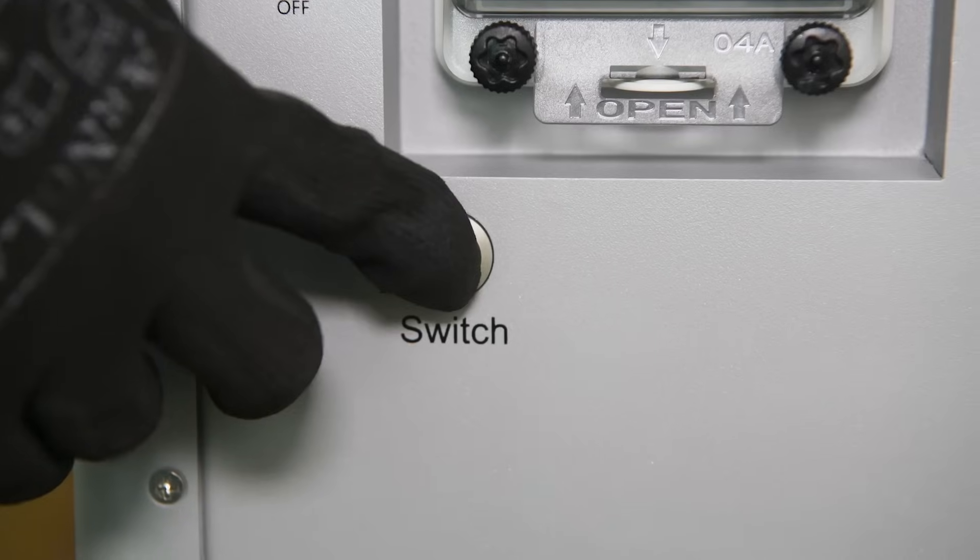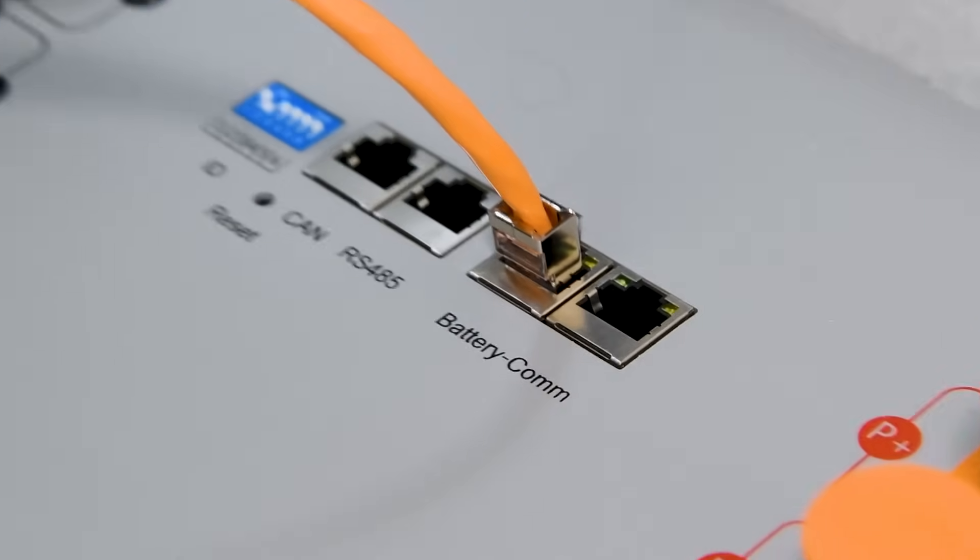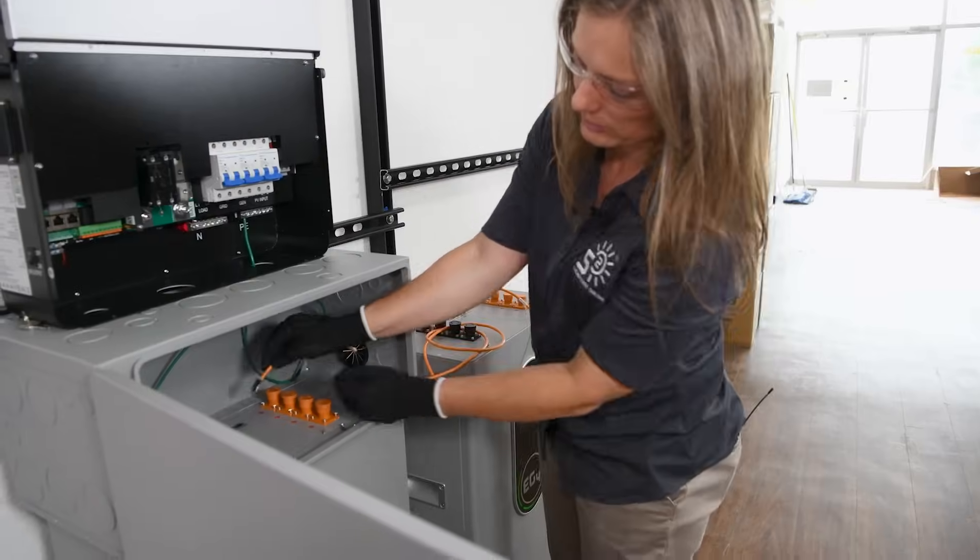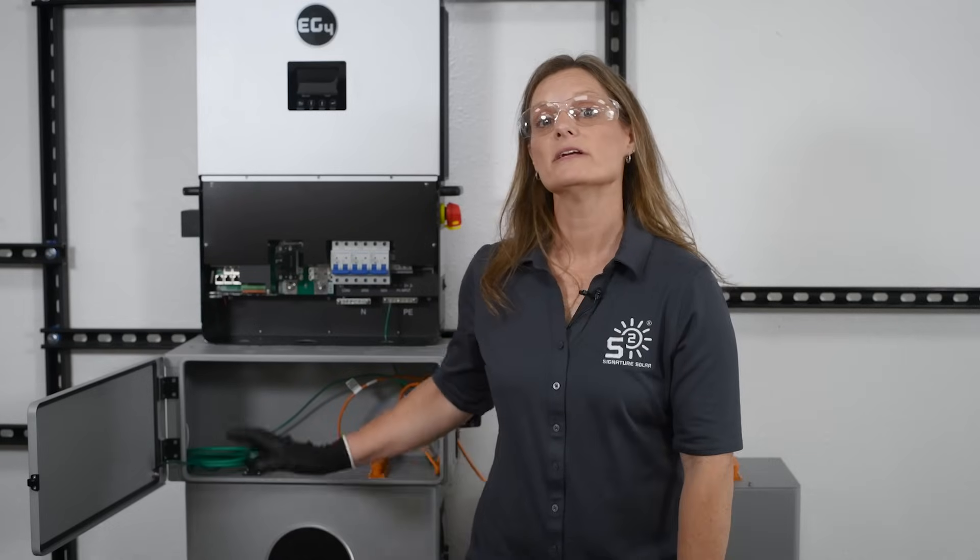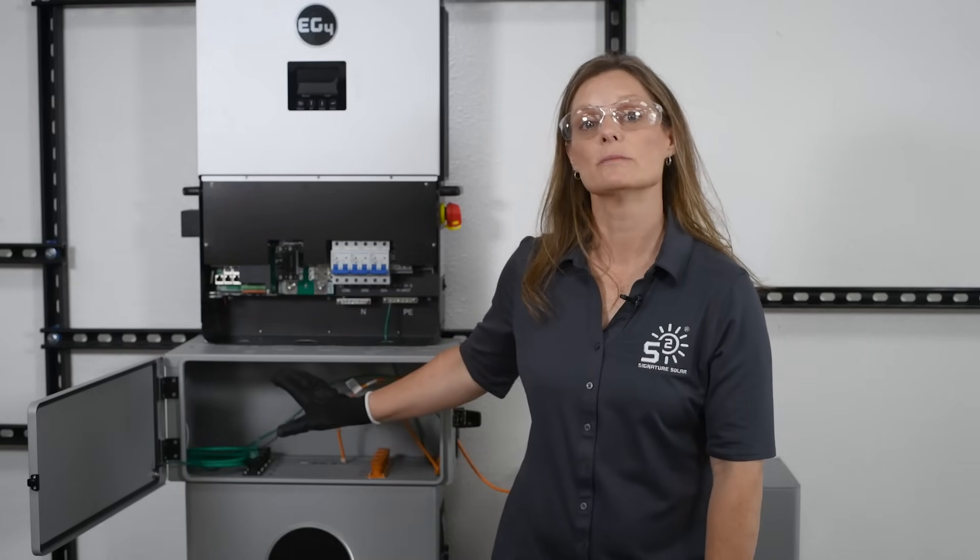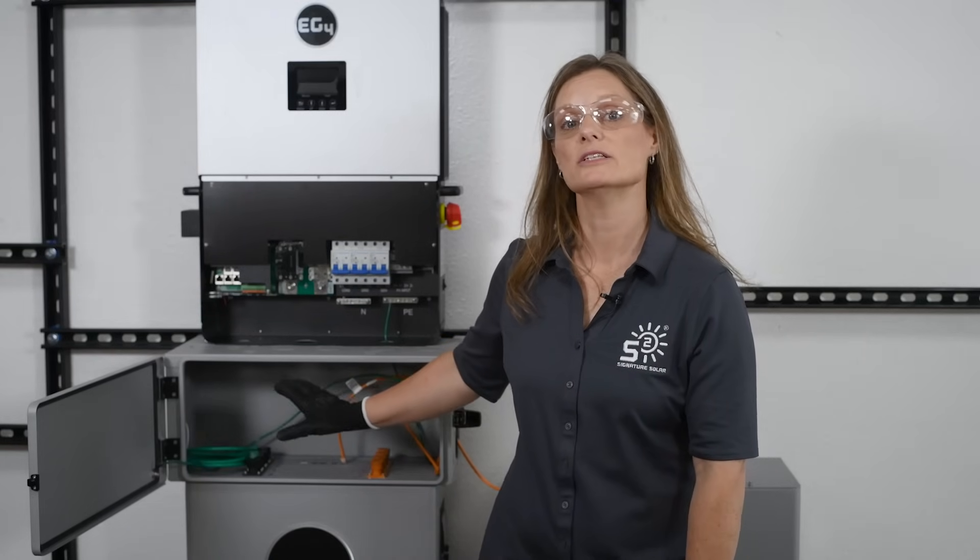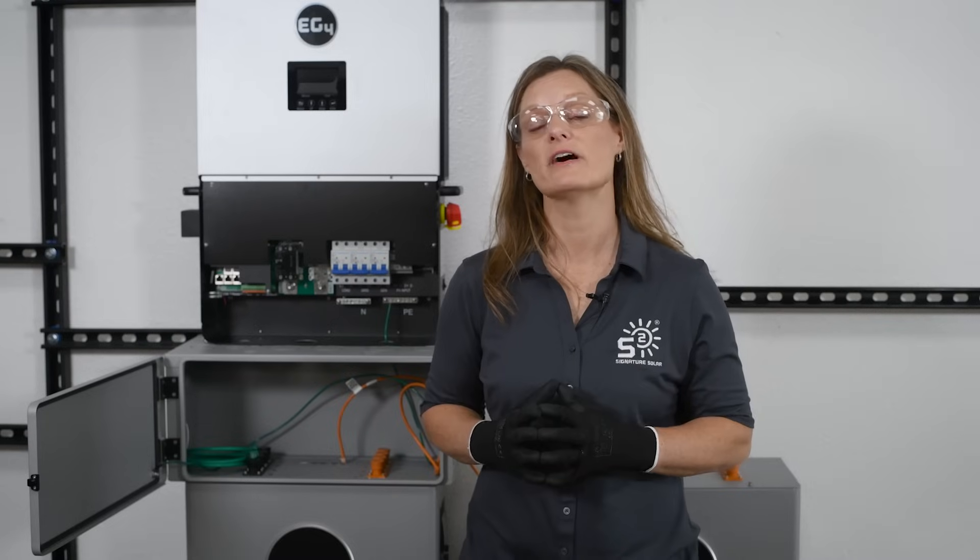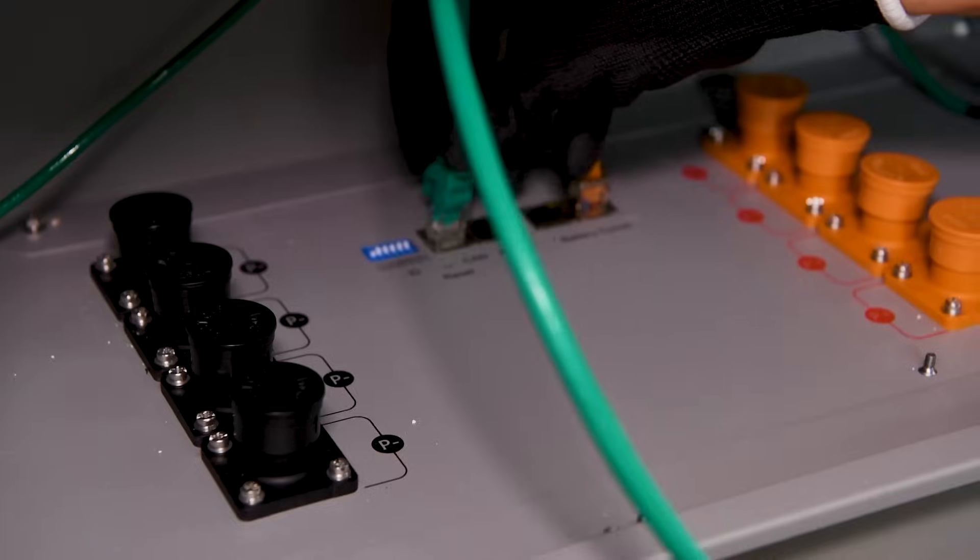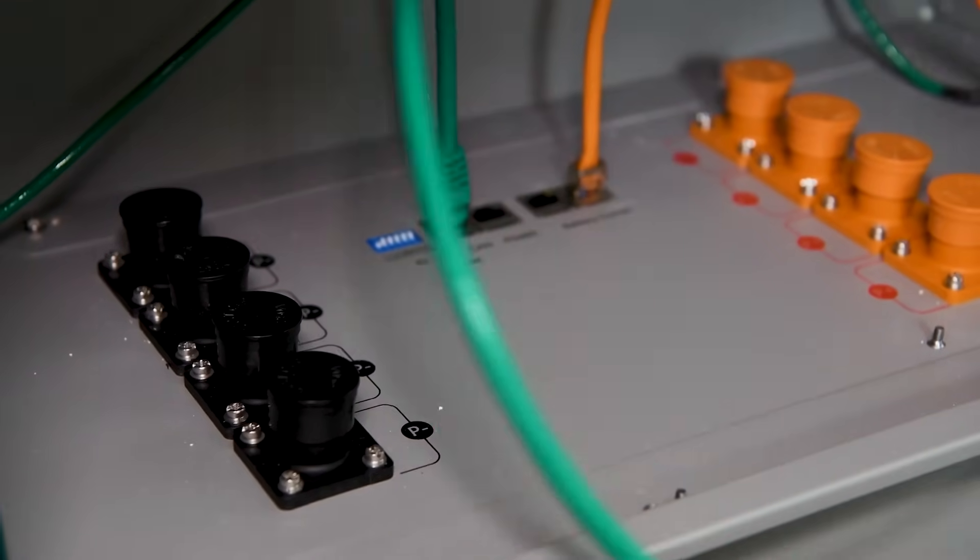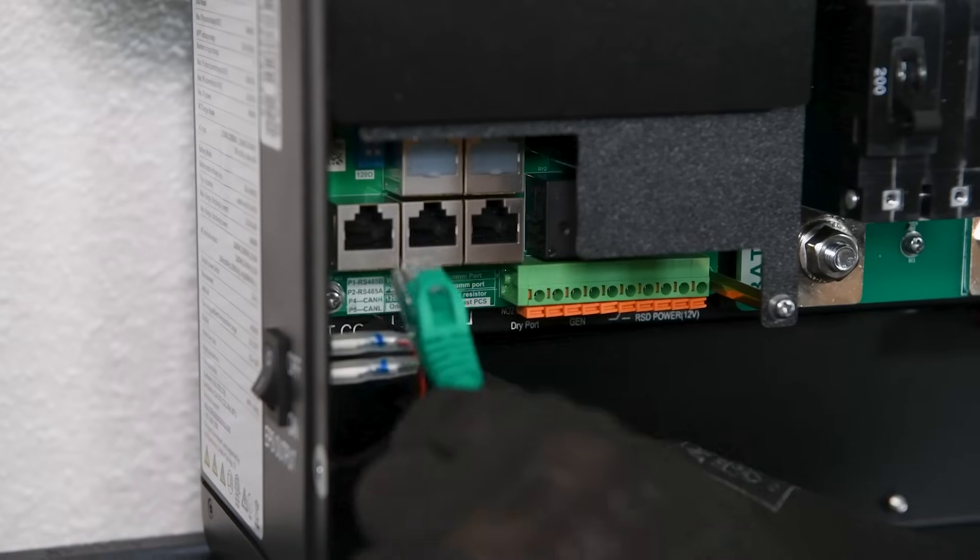Once all the ID addresses have been set, we'll reset the battery BMS by pressing the power button to register the address change. Then run your communication cable from the first battery com port of the second battery to the second battery com port on your master battery. The battery designated as your master with its ID set to address number one will be directly connected to the inverter. Depending on your inverter model, you can choose between CAN or RS-485 communication protocols. For the 6000 XP, we'll use CAN. We'll connect the communication cable from the CAN port on the master battery to the communication port on the inverter.